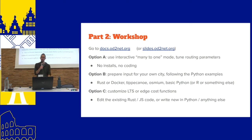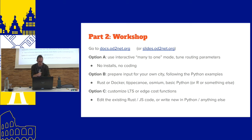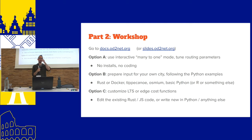If people have laptops, you can follow along. Find the slides at slides.od2net.org and documentation at docs.od2net.org. Depending on time and interest, there are three options: an interactive browser mode requiring no coding or installation; a tutorial to reproduce existing results for Edinburgh or York if you have tools like Tippecanoe, Osmium, and Python; or actually running OD2NET for your own area if you know how to find census or origin-destination data and can write simple Python scripts to prepare inputs.